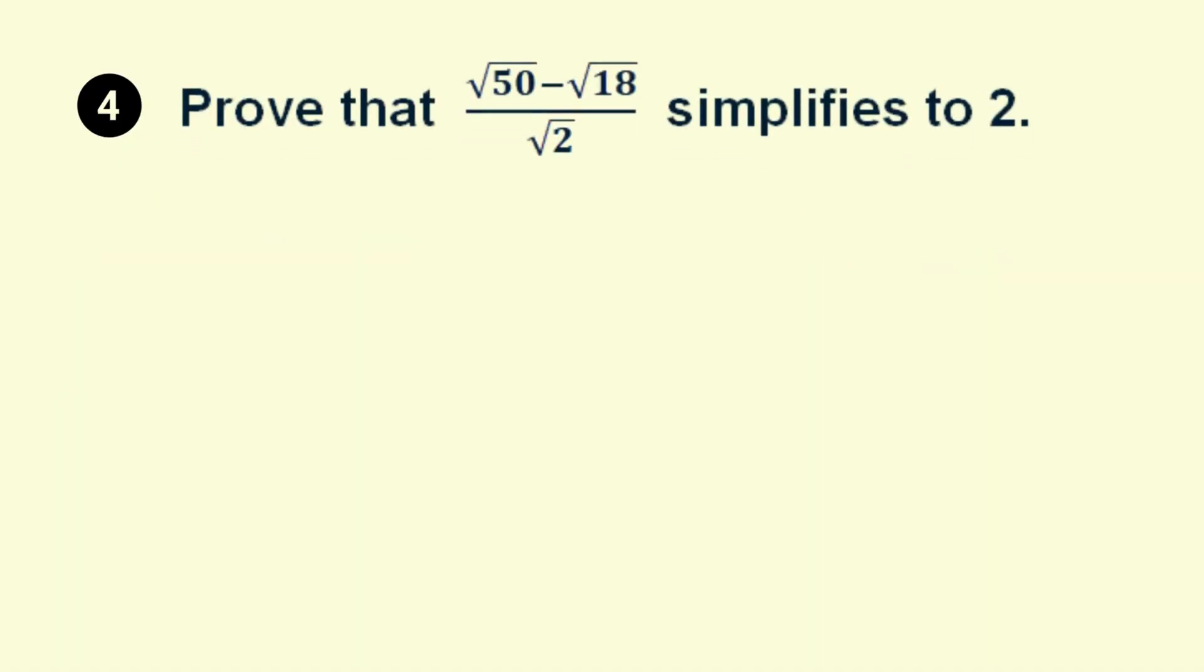The fourth and final problem is to show that the square root of 50 minus the square root of 18 all over the square root of 2 is equal to 2. To rationalize the denominator, we multiply by root 2. But we also need to multiply the numerator by the same root 2 to keep the fraction equivalent. In the numerator, root 2 times root 50 is root 100, while root 2 times root 18 is root 36. In the denominator, root 2 times root 2 is root 4.